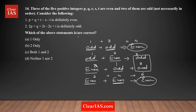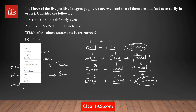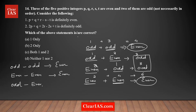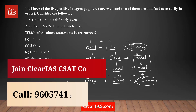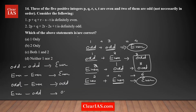The same rule applies for subtraction. Odd minus odd gives even, and even minus even also gives even. But unlike terms — odd minus even or even minus odd — the result is also odd, just like addition.